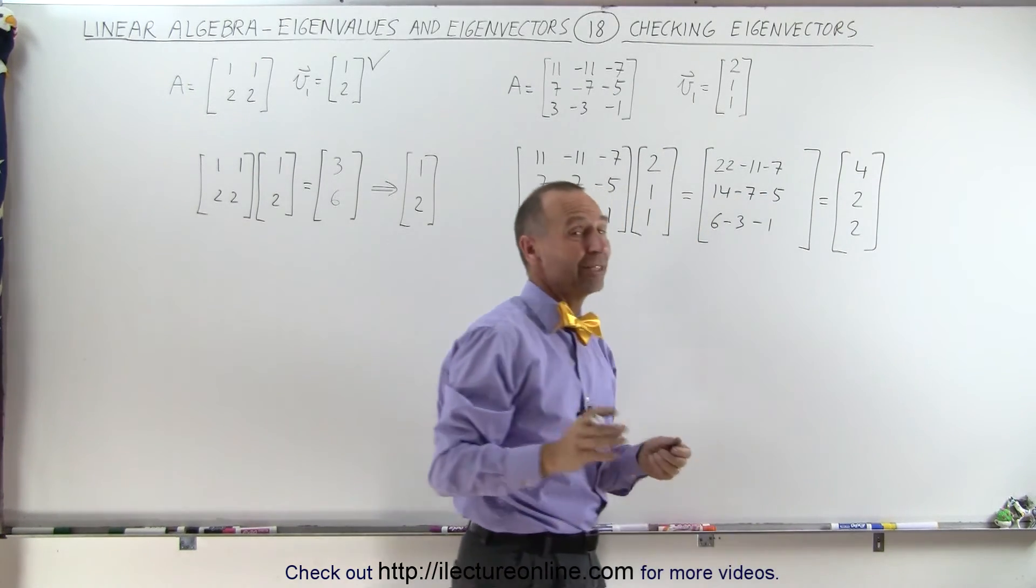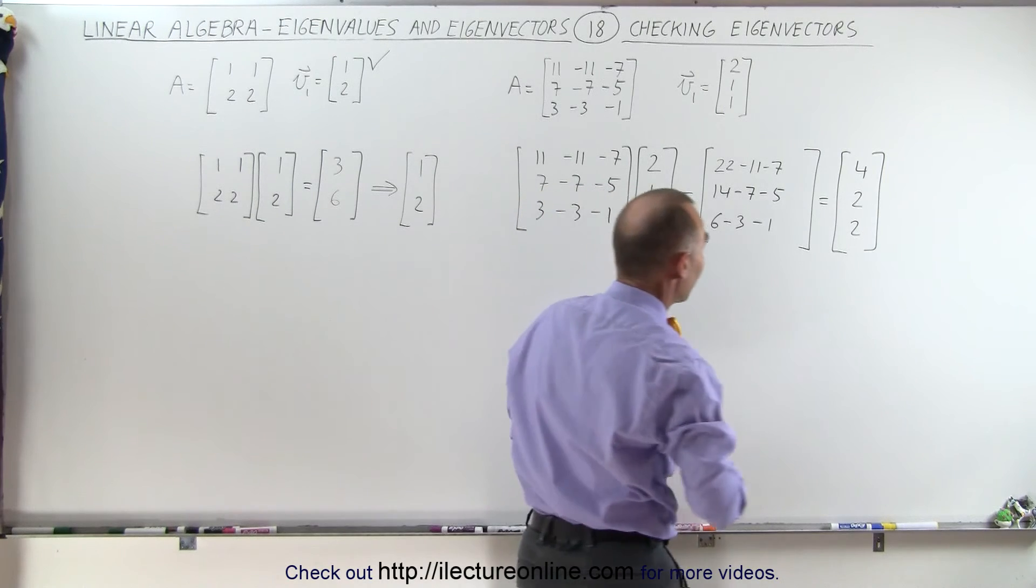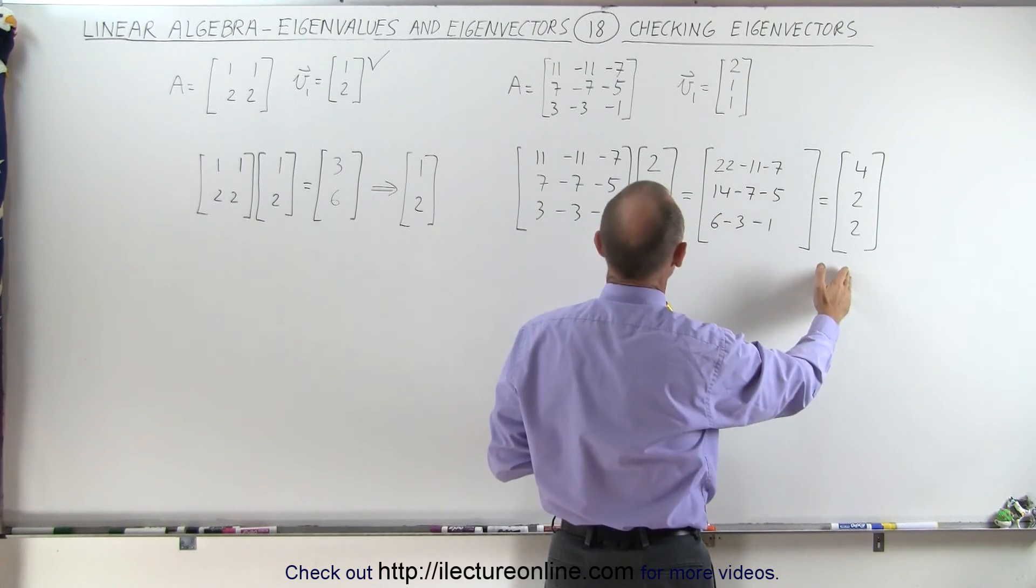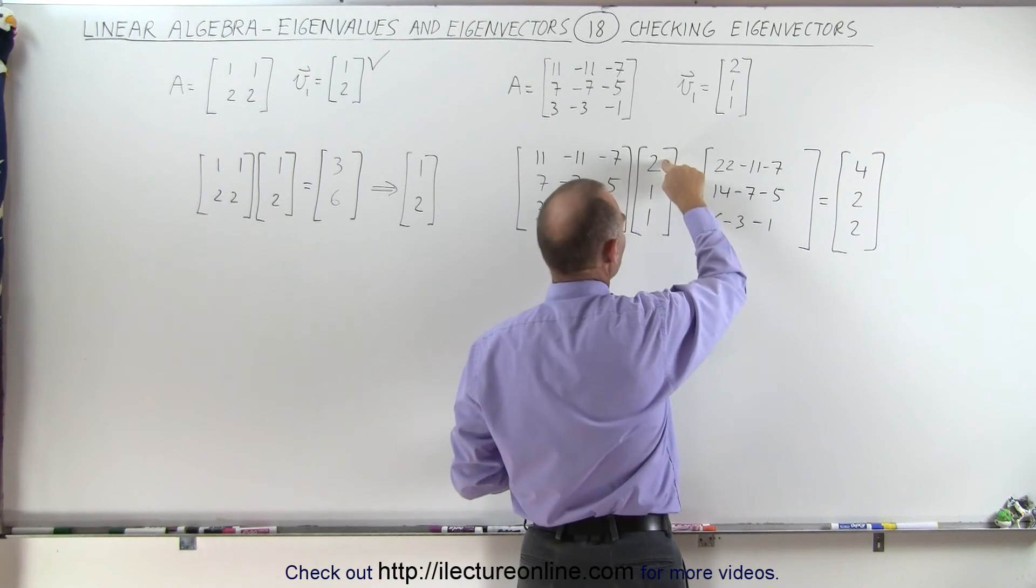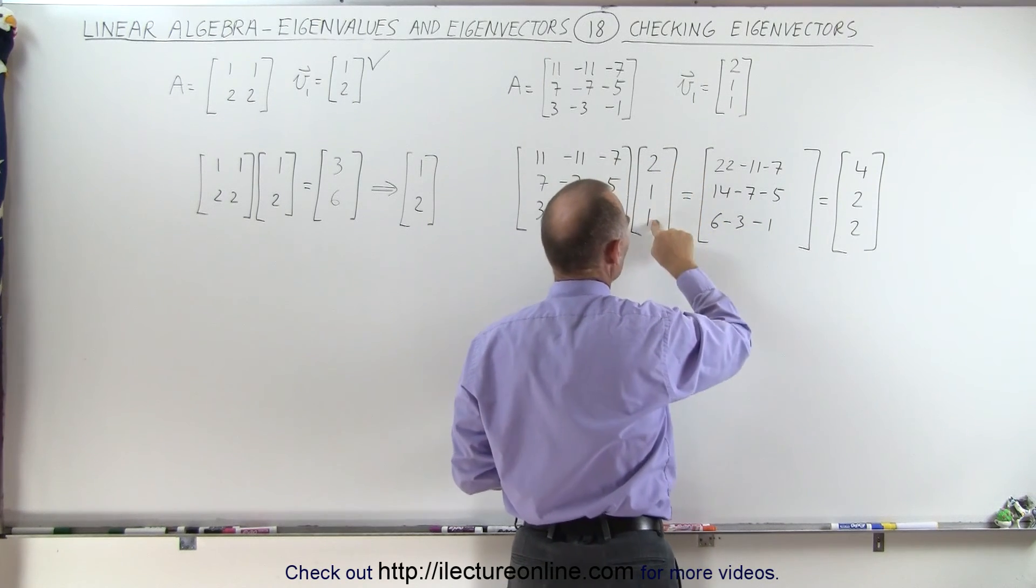Again at first sight you say well you did not get the same vector, but that's not really true because these are relationships between x, y and z. x is twice as big as y, y is equal to z.